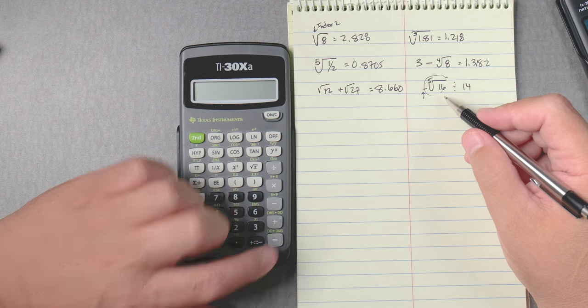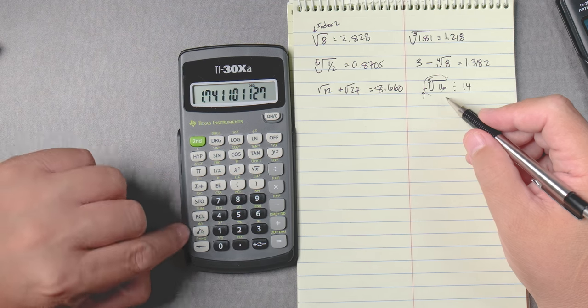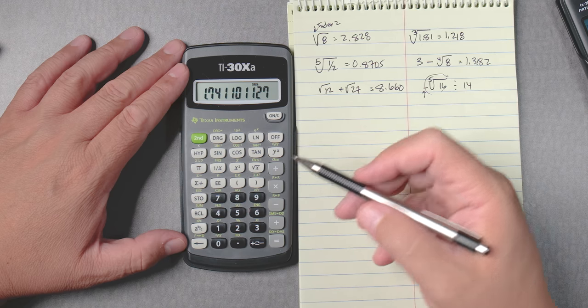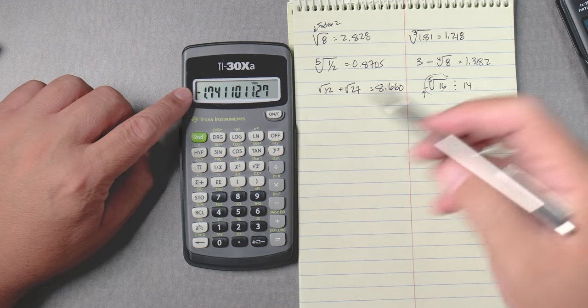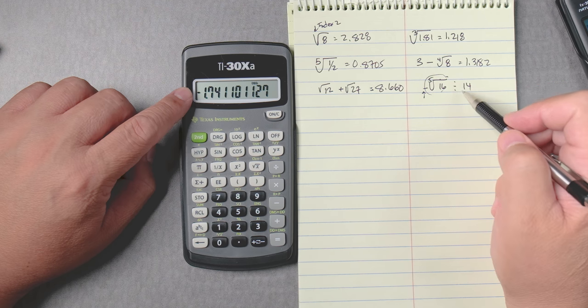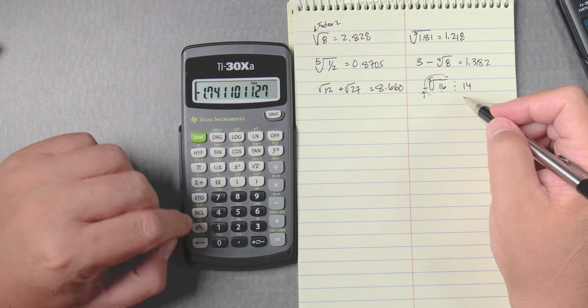Then we'll put a negative sign next to it which is right here, divided by 14 equals. We get negative 0.124.